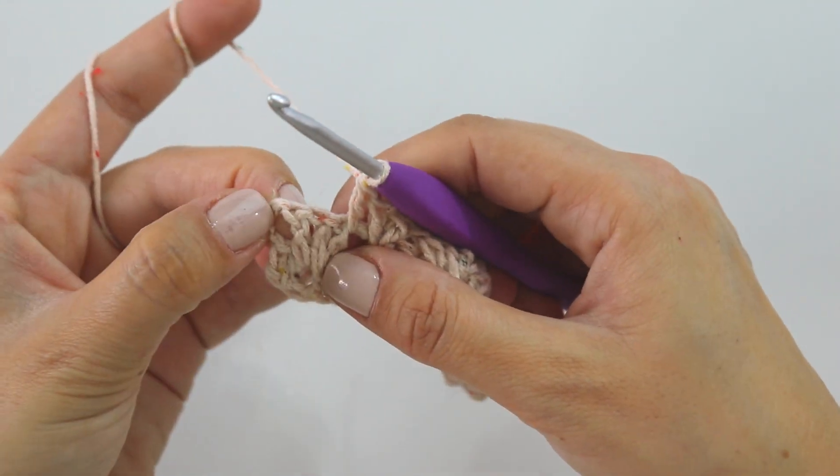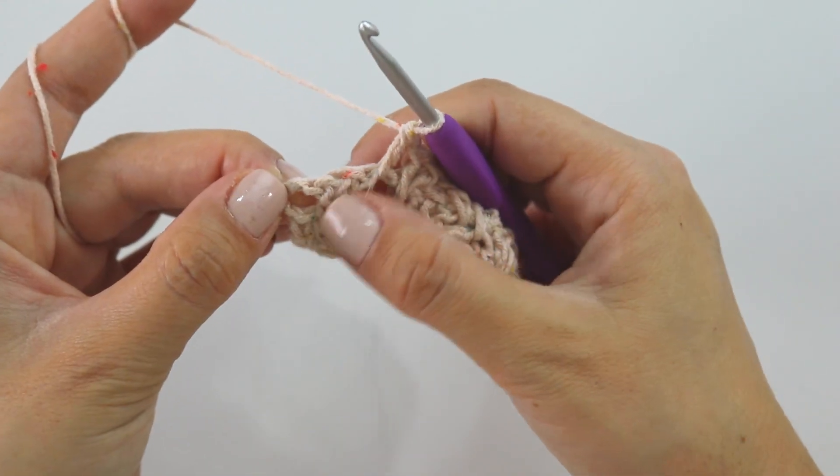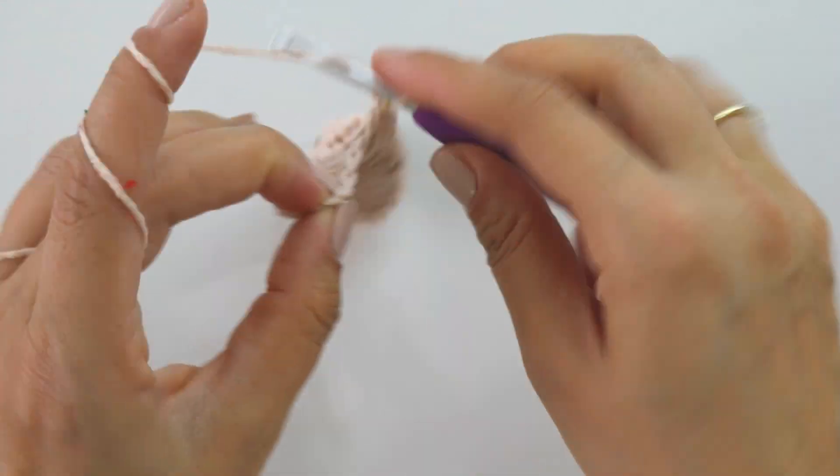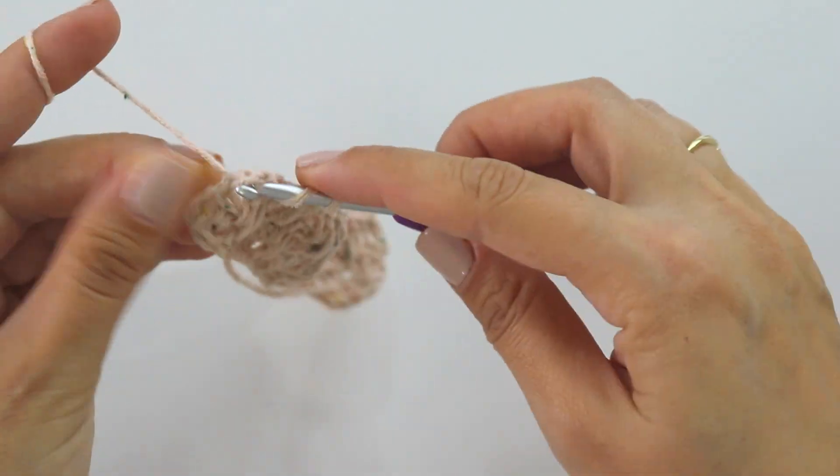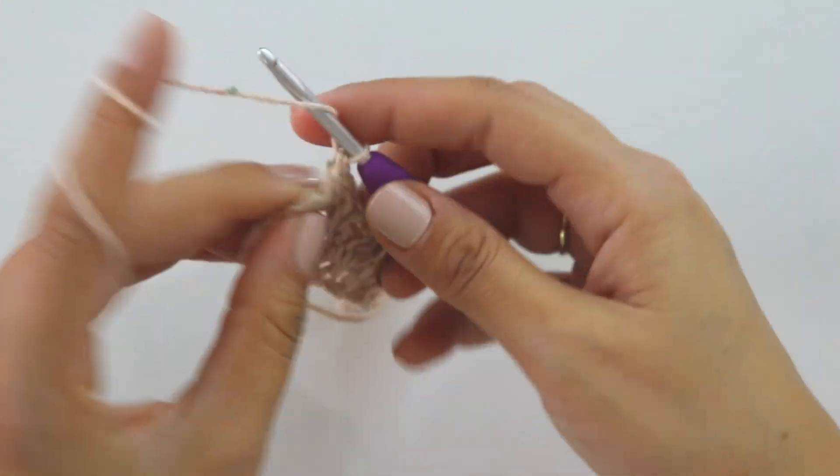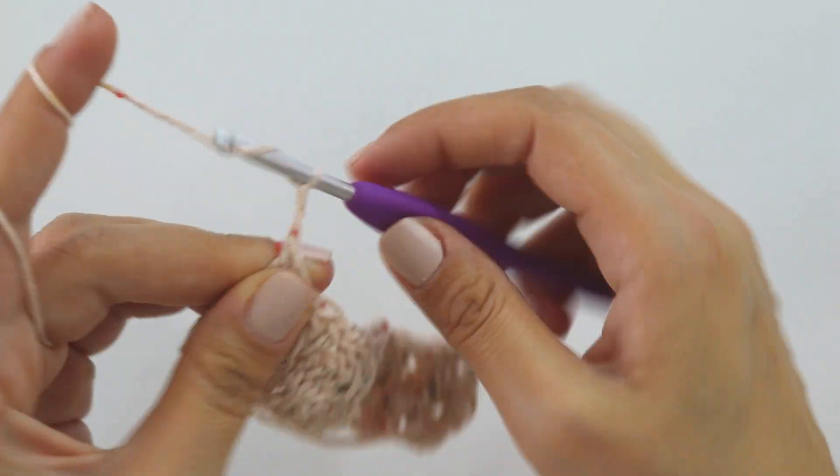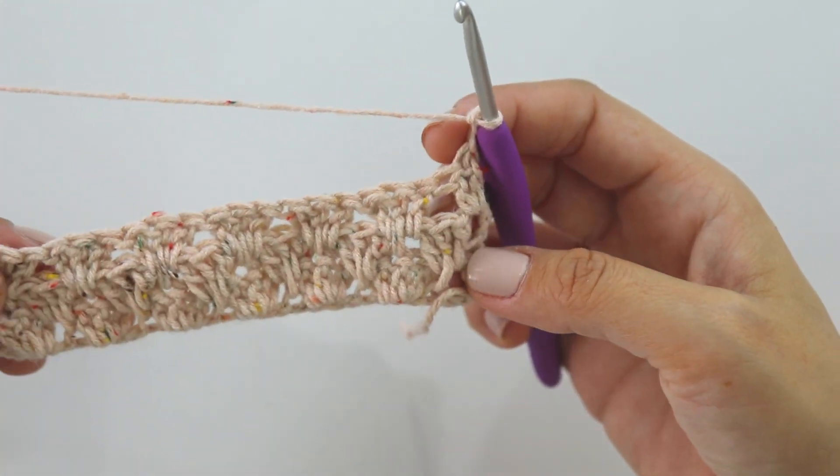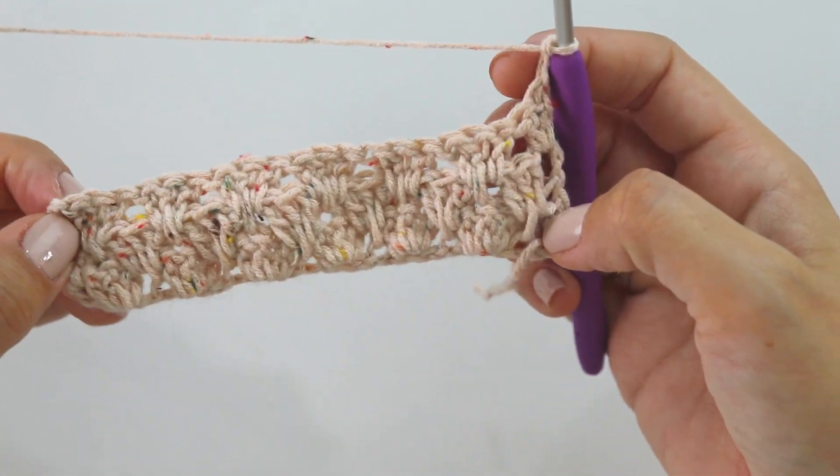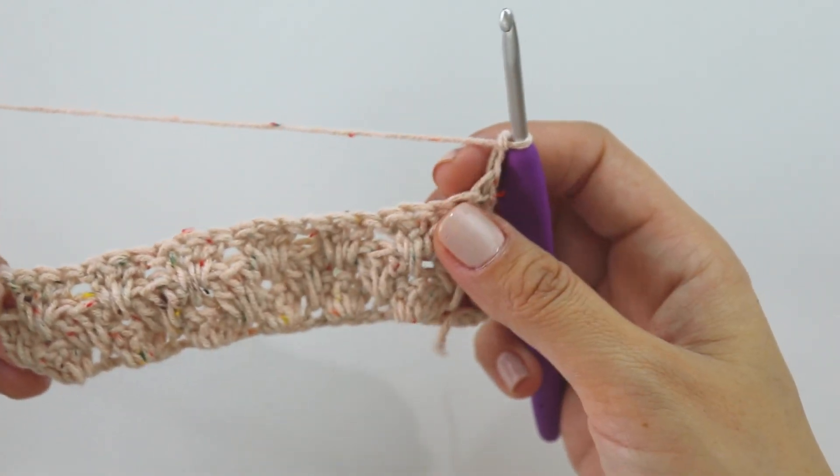And in the end make a double crochet between this set and double chains. Make two double crochets. Chain three, turn, and repeat it as long as you want, okay.